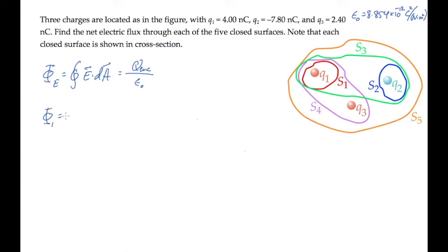Surface one, the red one, encloses only the charge q1. So its flux is the enclosed charge, that's q1 divided by epsilon naught. q1 has a charge of 4 nanocoulombs. So when you calculate, you find that the flux through surface one is 452 newton meters squared per coulomb.